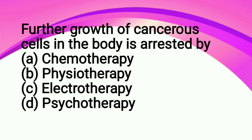Further growth of cancerous cells in the body is arrested by: A chemotherapy, B physiotherapy, C electrotherapy, D psychotherapy. So the correct answer is chemotherapy. Chemotherapy is generally for cancer patients. After the doctor removes an organ-specific cancer, that organ is removed from the body.